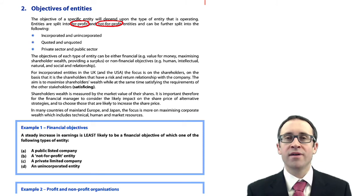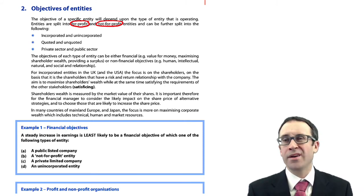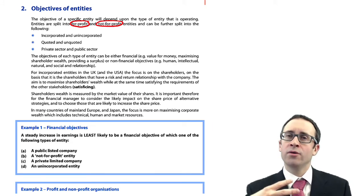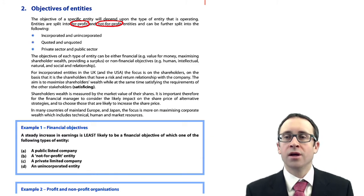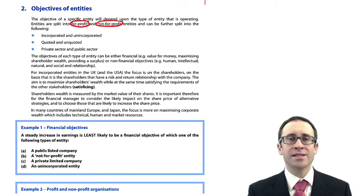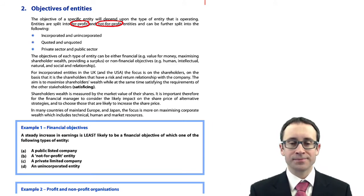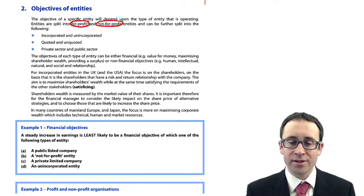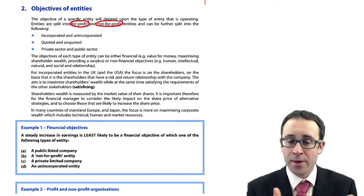Social and relationship non-financial objectives involve thinking about charitable donations and how you interact with the local community. Are there schemes you're running to encourage children within local schools to find jobs, or to offer them skills or courses linked to your entity? We then go through and talk about what the focus is in the UK and the US.